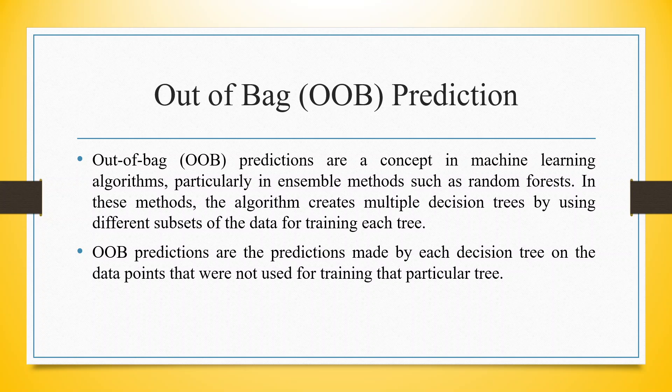After running the Random Forest, the output will generate out-of-bag predictions. Out-of-bag predictions are a concept in machine learning, particularly in ensemble methods such as Random Forest. In this method, the algorithm creates multiple decision trees using different subsets of the data for training each tree. Out-of-bag predictions are the predictions made by each decision tree on the data points that were not used for training that particular tree.